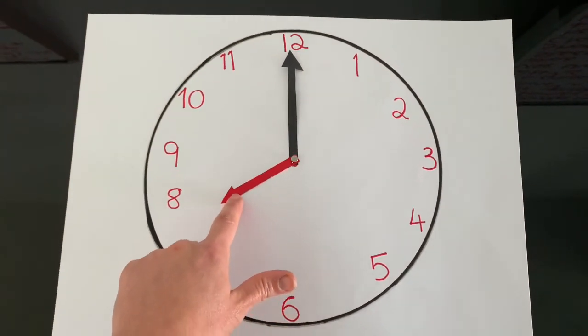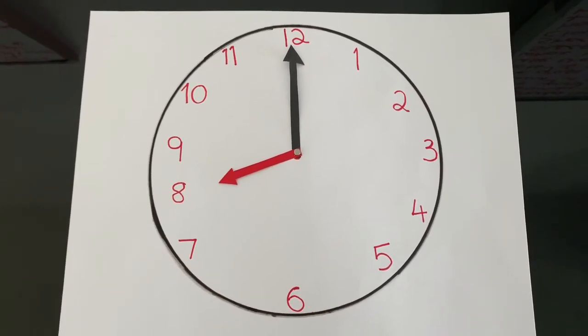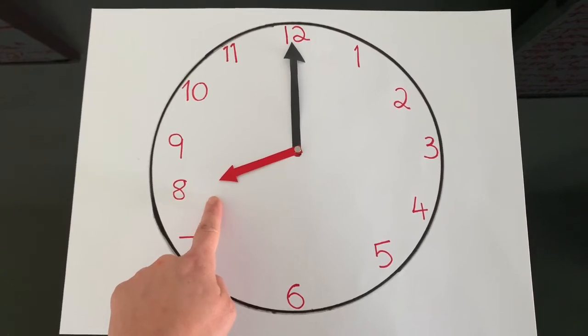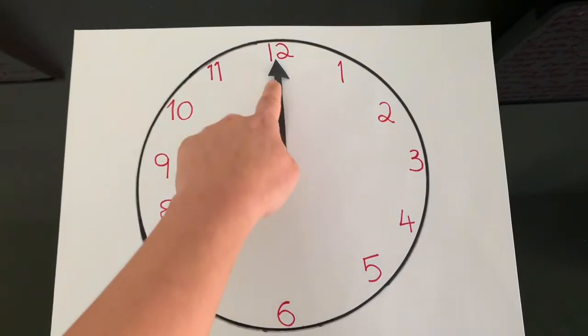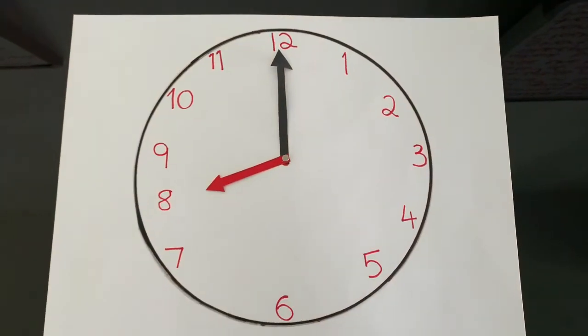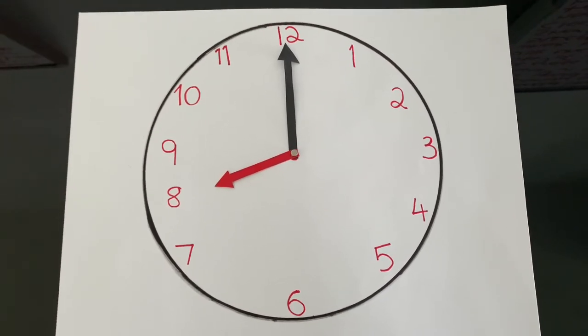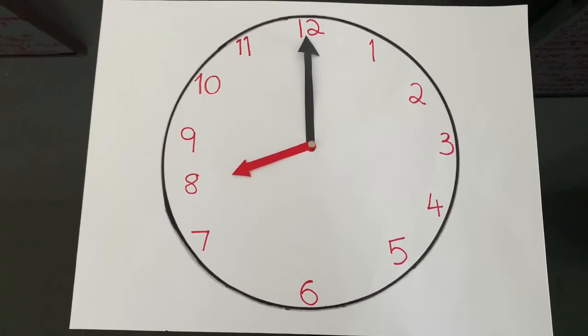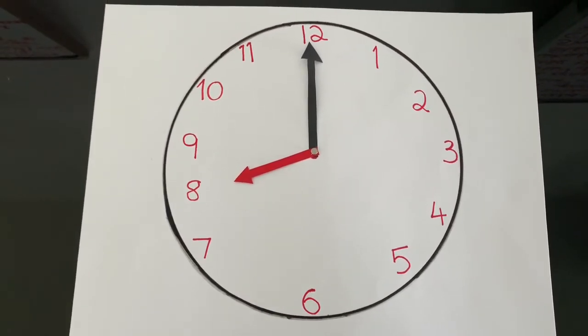Can you tell me what time it is? So the little hand, the hour, is pointing at 8, and the long hand, the minute hand, is pointing to 12. Yes, that's right, I woke up at 8 o'clock this morning.